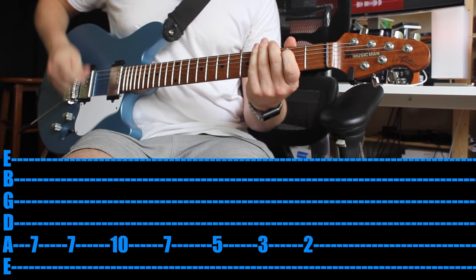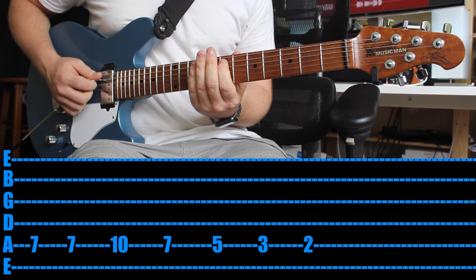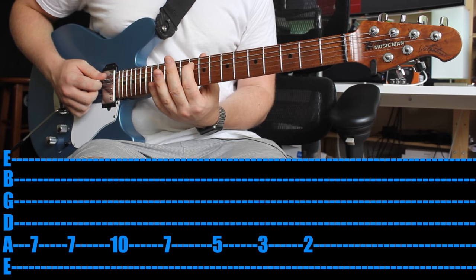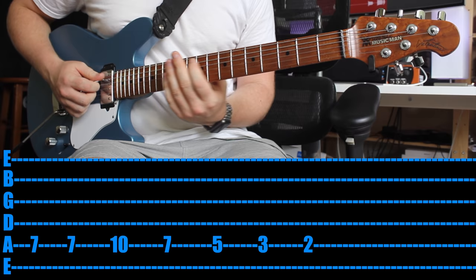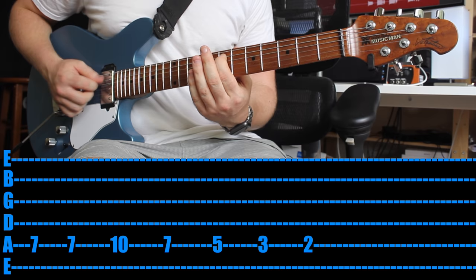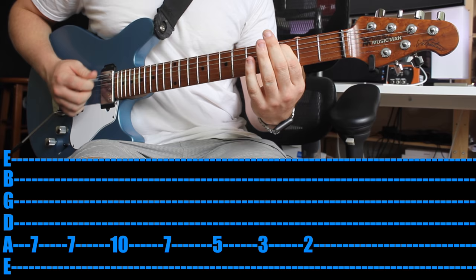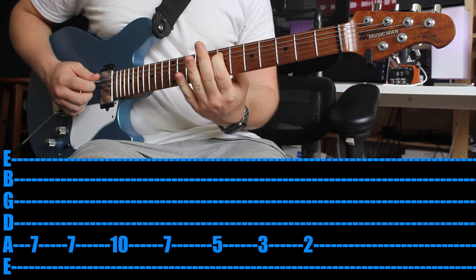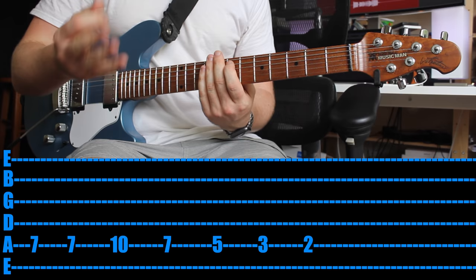So you come all the way up to the seventh fret on the fifth string. Then you play it again. Then you go up to the tenth fret same string. So what we've got so far. Once you've done that go back to the seventh fret. Then fifth fret. Third fret. Second fret. So nice and slow. Now that's it. That's the whole riff on one string.